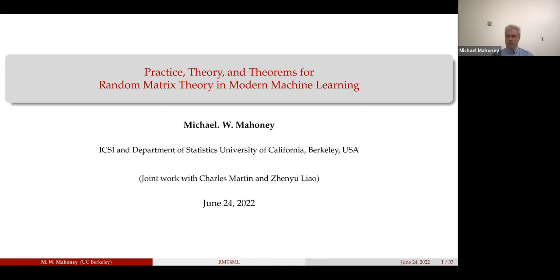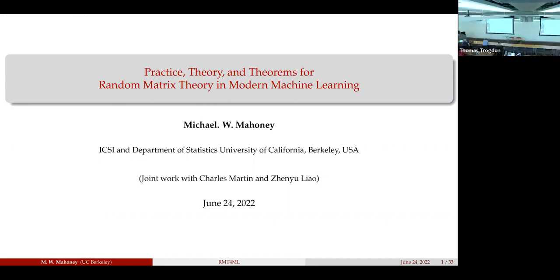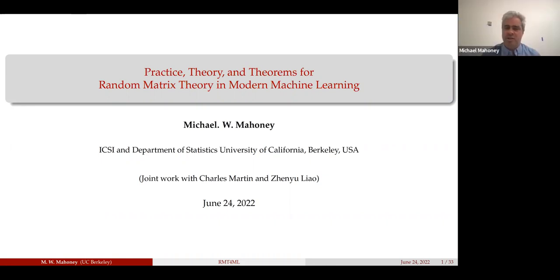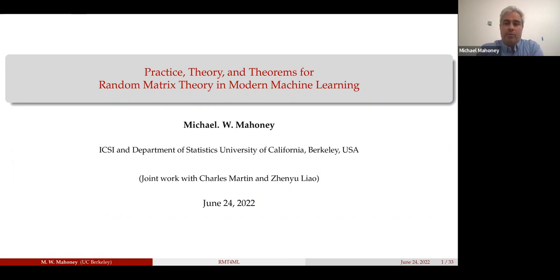I wanted to talk about some recent work we've done that's pulling together two or three threads. A lot of the motivations are coming from recent work in random matrix theory being applied to various machine learning problems. I think that a lot of the problems you encounter in machine learning are rather different than maybe typical past applications of random matrix theory.